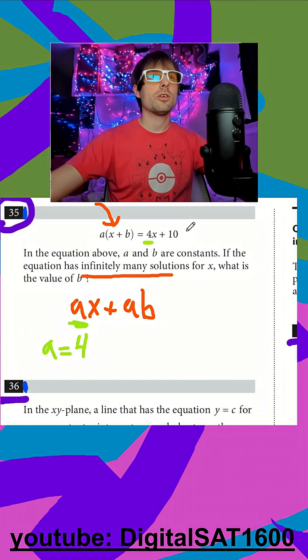And then for my second equation, we know that our y-intercept is 10. For them to be identical, my ab has to be equal to 10. And if I know that my a is 4, it's just 4b is equal to 10.